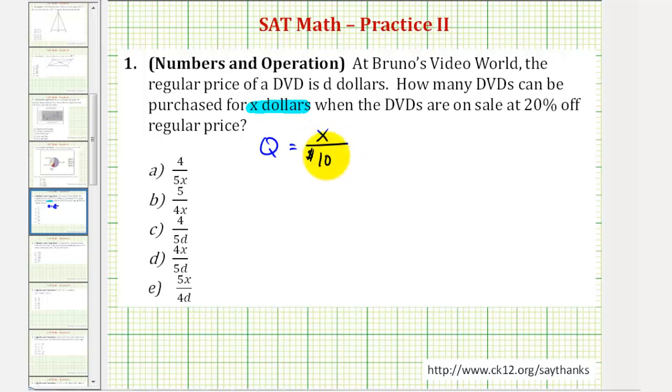Next we want to find the cost per DVD when we're told the DVDs are regularly D dollars each but they're 20% off.